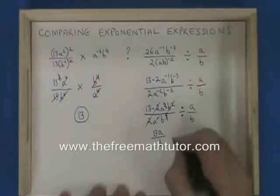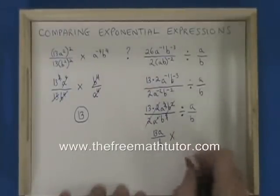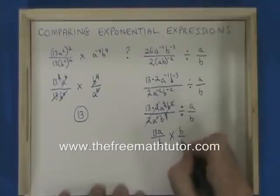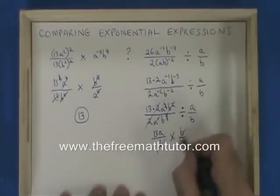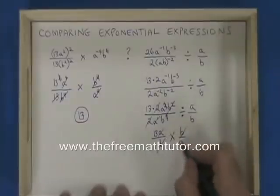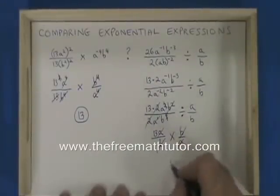Because I'm dividing fractions, I multiply instead. And I turn the second fraction upside down. Now, these b's cancel, and these a's cancel. All that's left is 13.